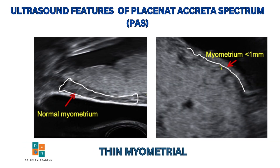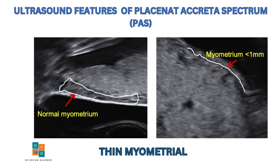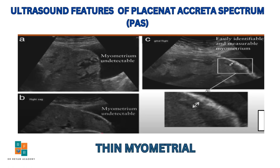The next feature is thinning or absence of the myometrium beneath the placenta. In this finding, the myometrial thickness measures less than one millimeter or becomes undetectable, and it is observed in approximately 50% of placenta accreta spectrum cases. These images clearly demonstrate the normal myometrial interface in cases of normal placental implantation, and the absence or undetectable myometrium in cases of placenta accreta spectrum.